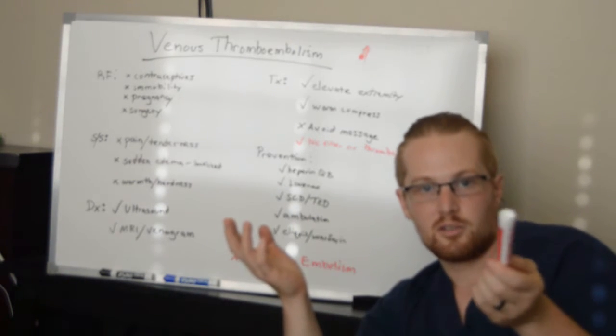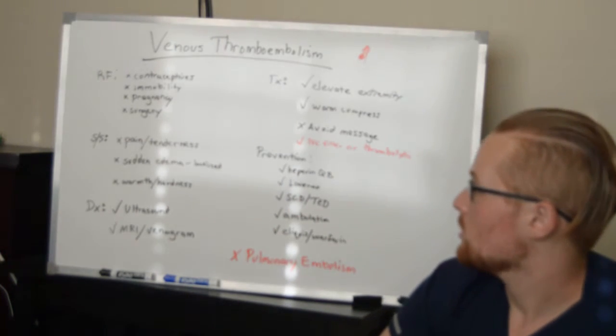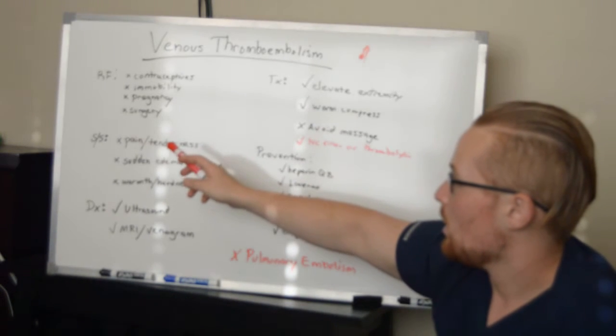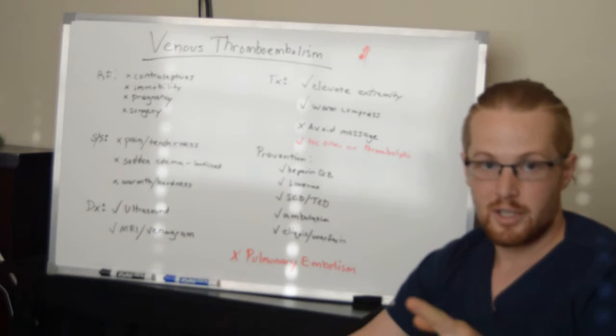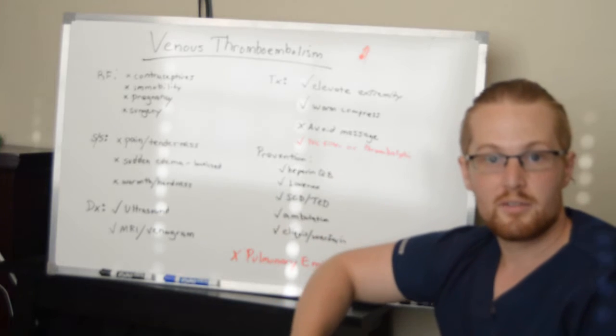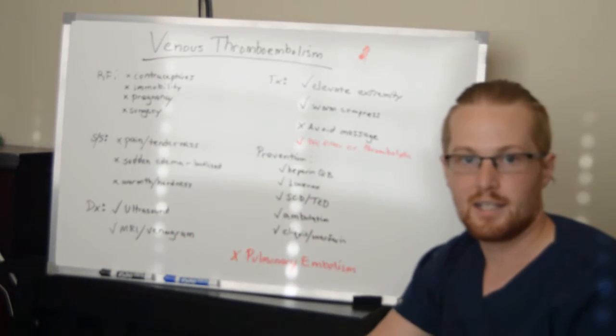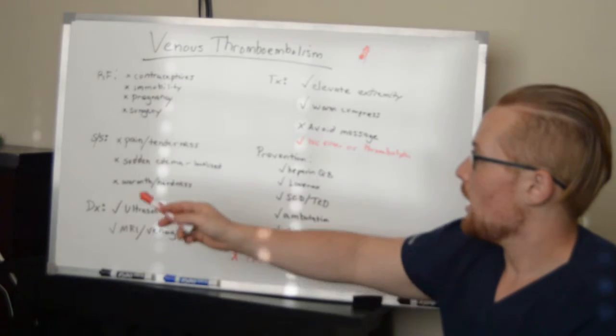So signs and symptoms that a VTE has happened: pain and tenderness. Typically one of these venous thromboembolisms might be at the bend of the elbow or the bend of the knee because that's where there's a bend in the vessel, and so that's more likely that a thrombus would attach itself there.